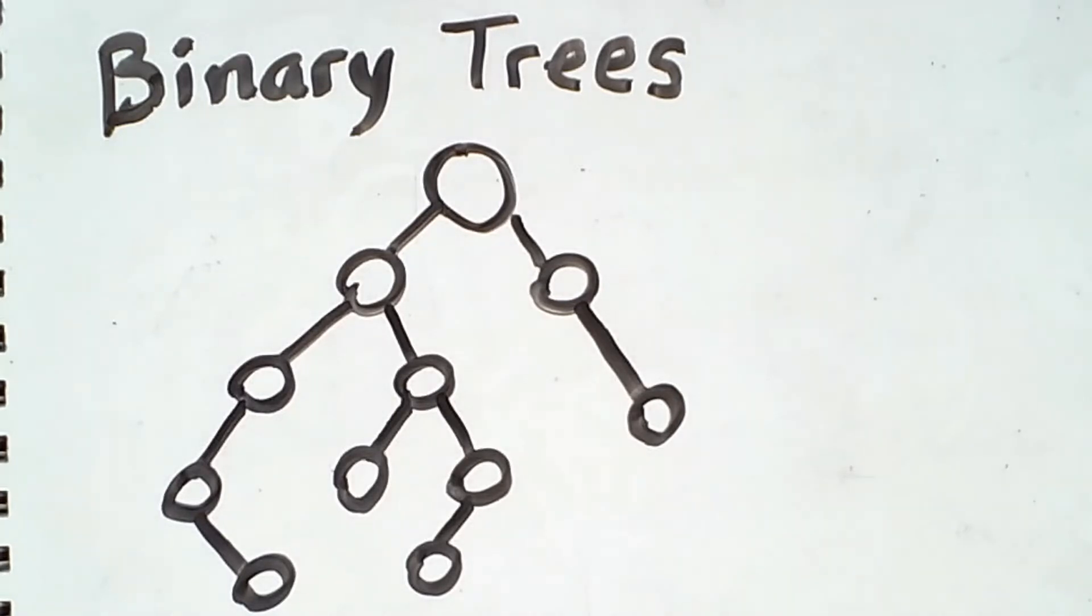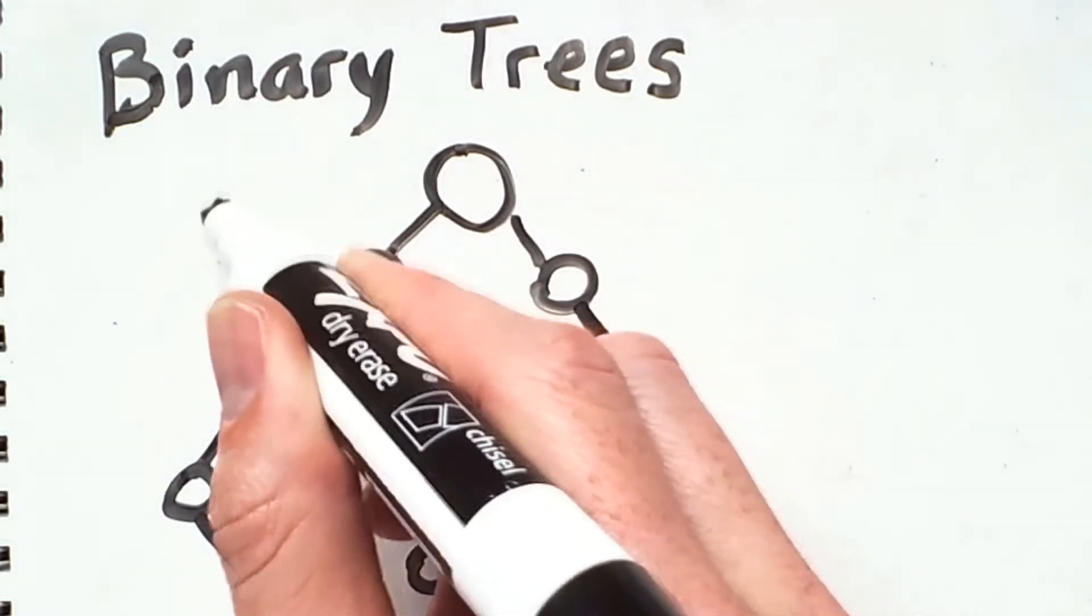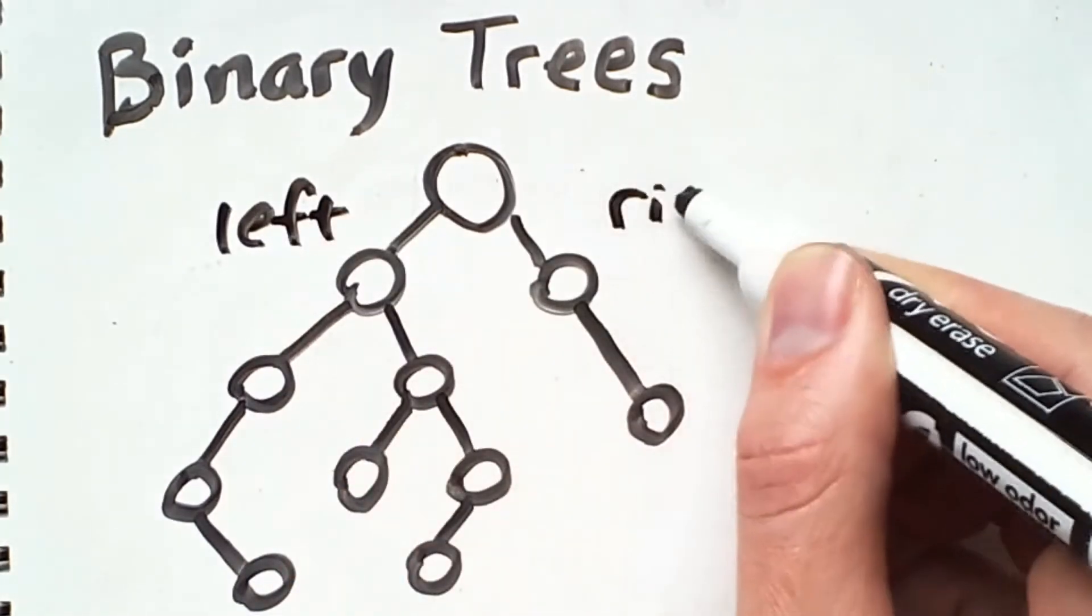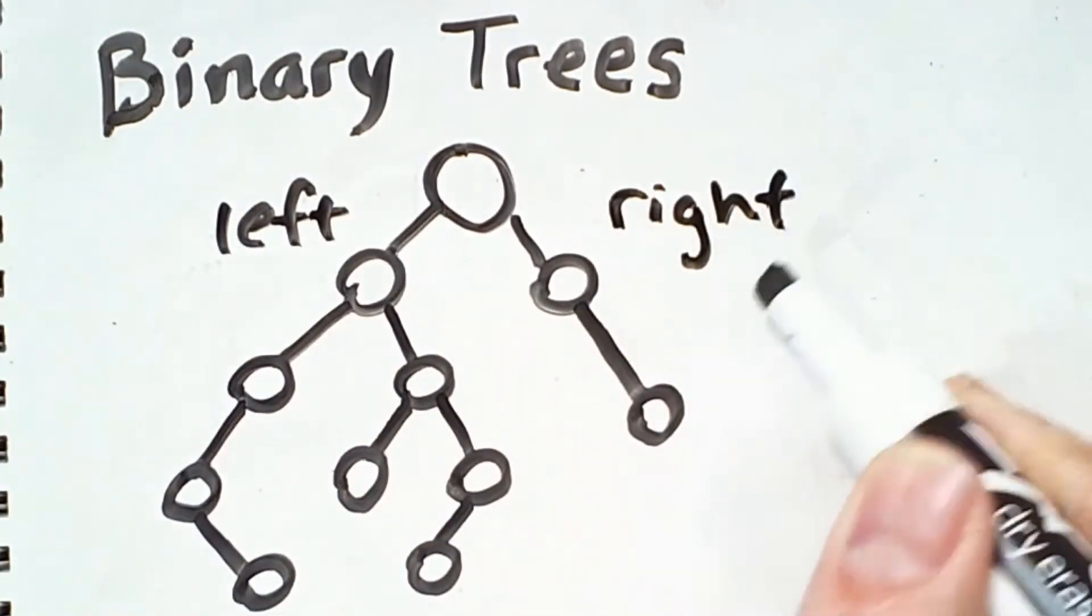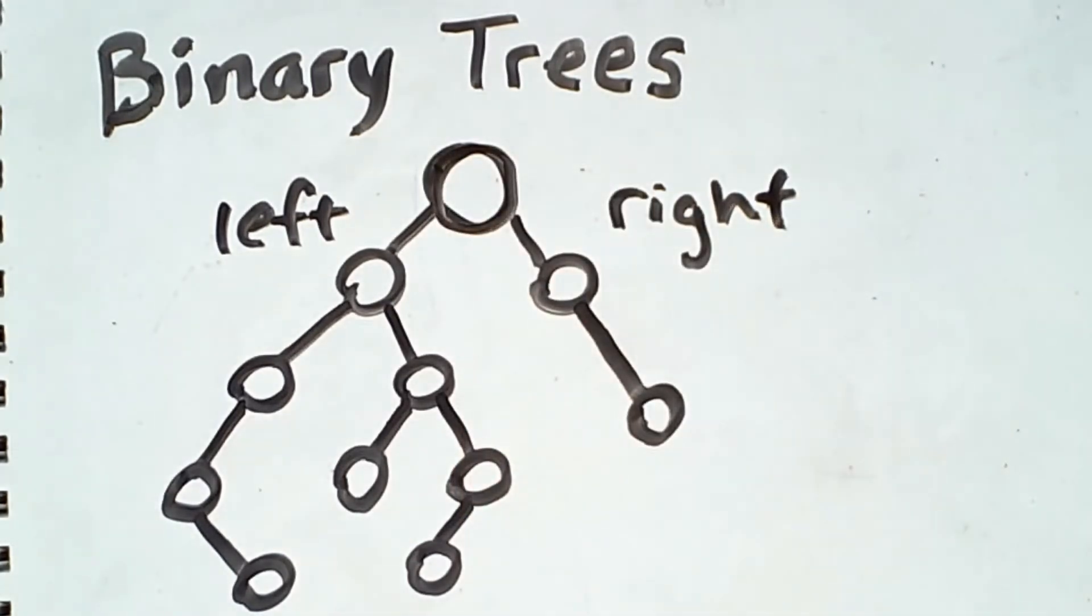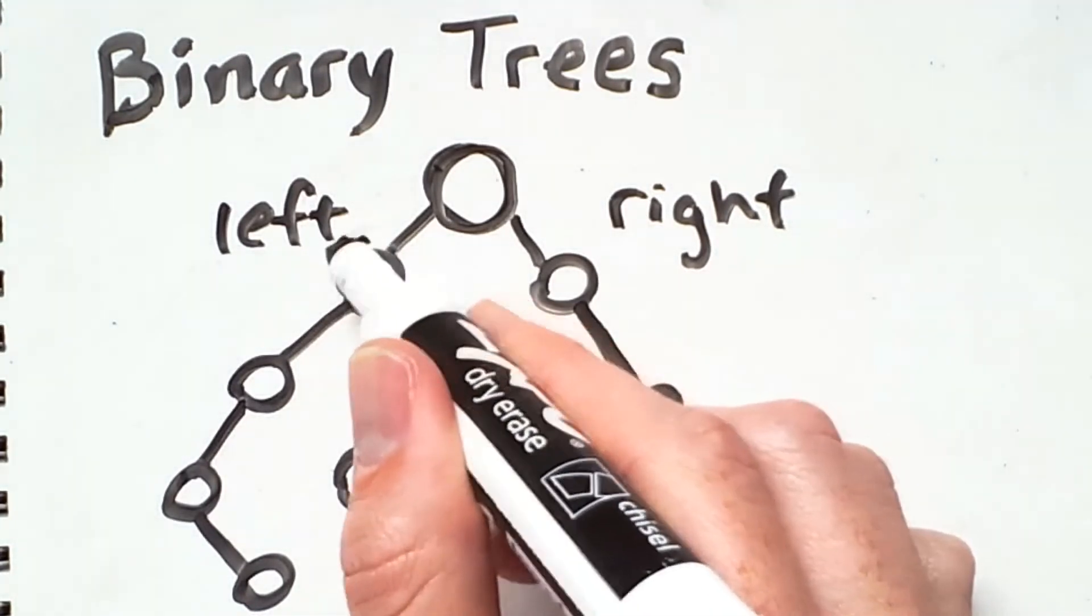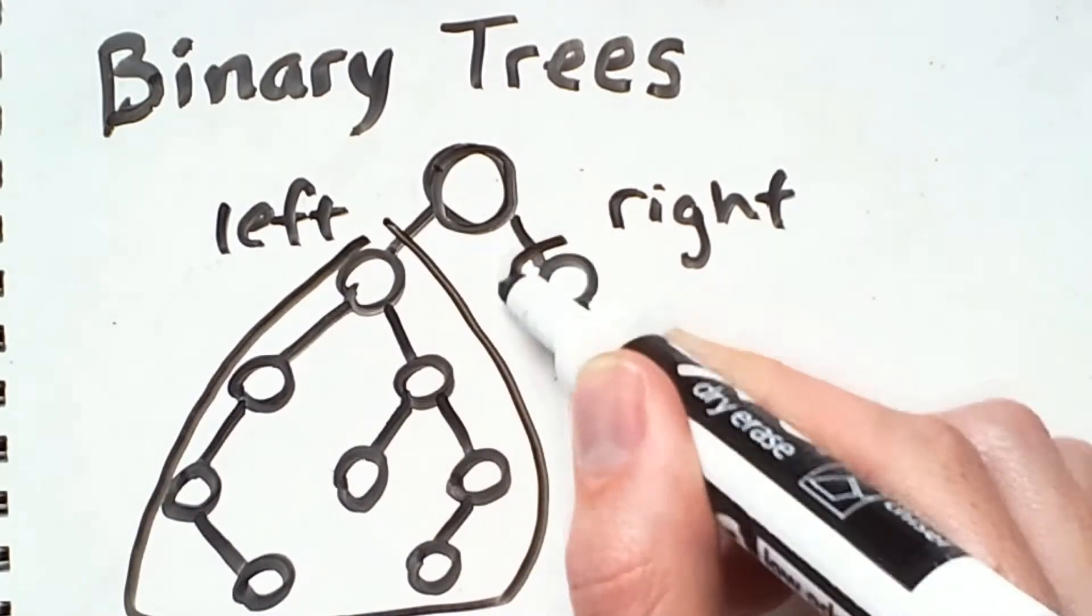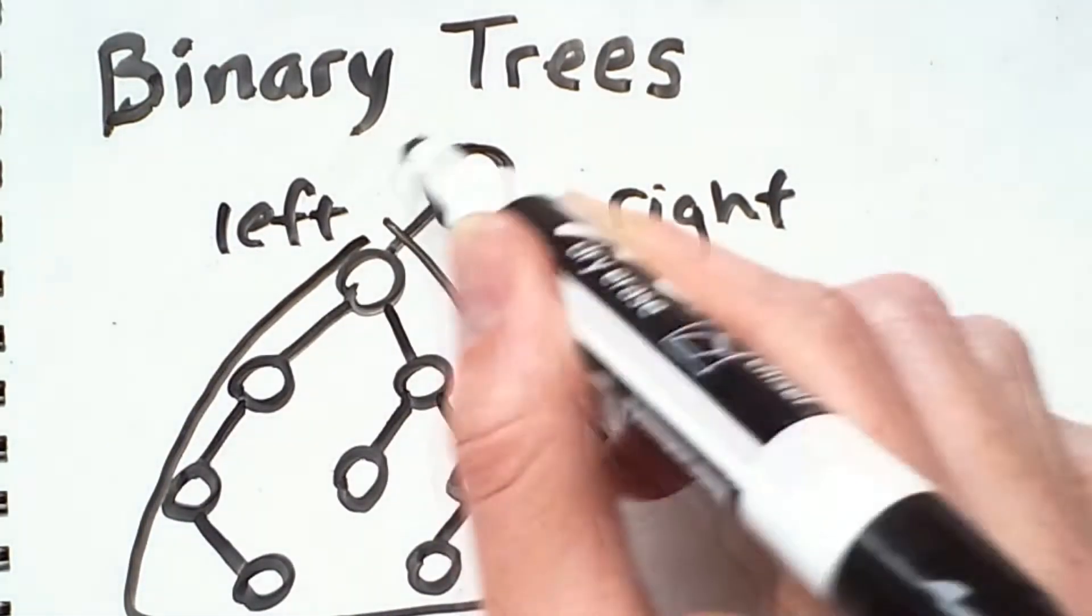These children, if they are present, are known as the left and right child of their respective parent node, and their respective subtrees are known as the left and right subtrees of the parent node.